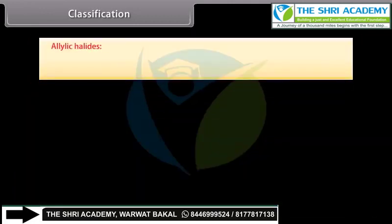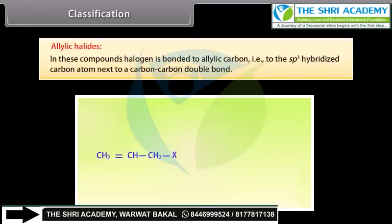Allylic halides: in these compounds, the halogen is bonded to an allylic carbon — that is, to the sp3 hybridized carbon atom next to a carbon-carbon double bond.